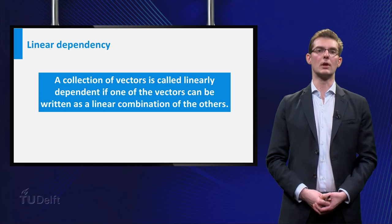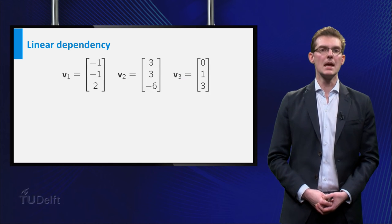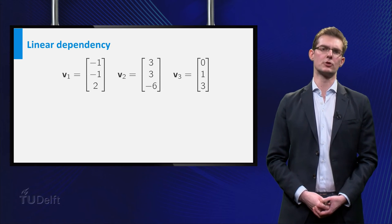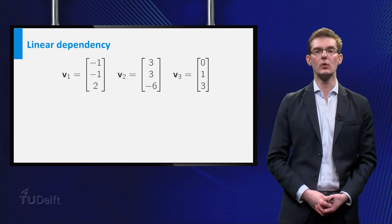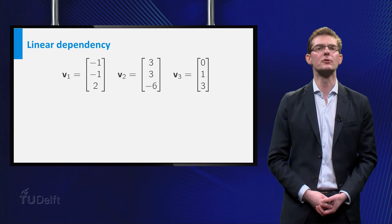Here is another example of a collection of three linearly dependent vectors. This example is a little different from the previous one. The vector V3 cannot be written as a linear combination of V1 and V2. Take a few seconds to figure out why.